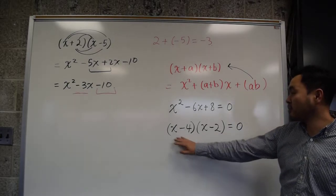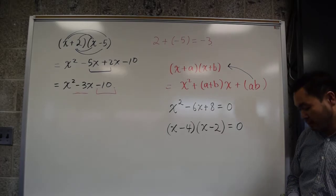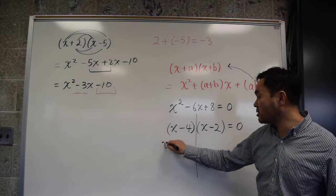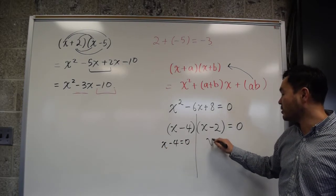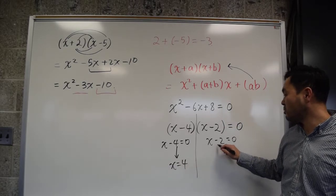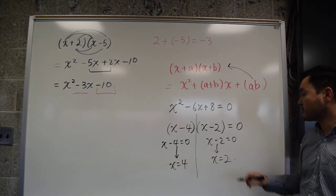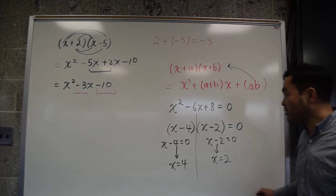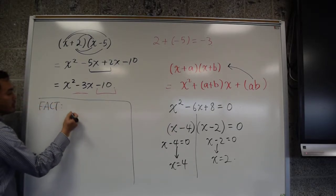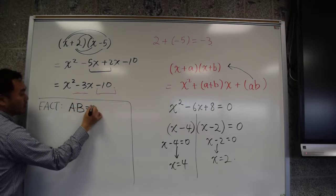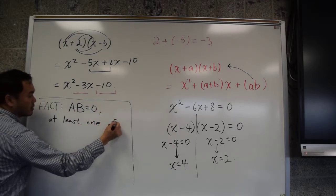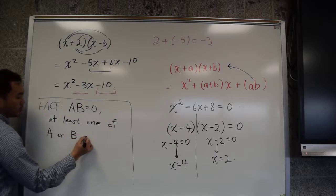Now, once you have this format, now you can solve this by saying that at least one of them should be 0. So, either (x-4) = 0 or (x-2) = 0. And this would be true if x is 4. This would be true if x is 2.